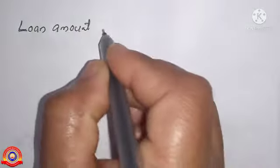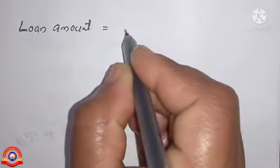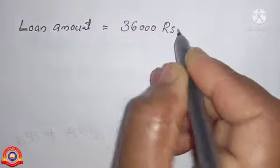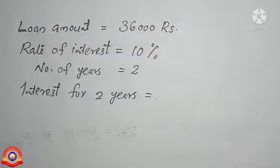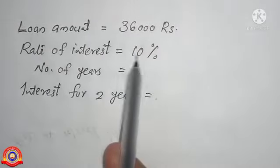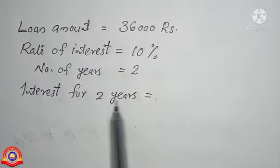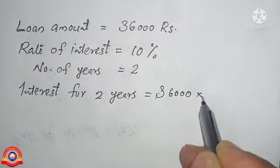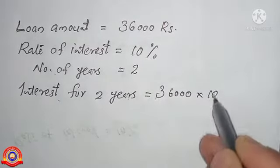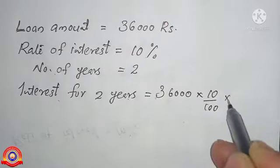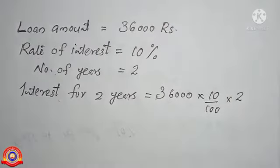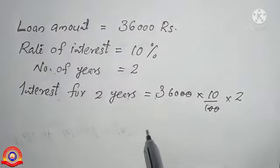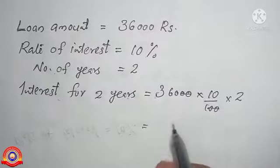In this question, given that loan amount is equal to 36,000 rupees, rate of interest is equal to 10 percentage, number of years is equal to 2. Then interest for two years is equal to 36,000 into 10 by 100 into 2. We cancel two zeros on both numerator and denominator, so it becomes 360 into 20, which is equal to 7,200 rupees.